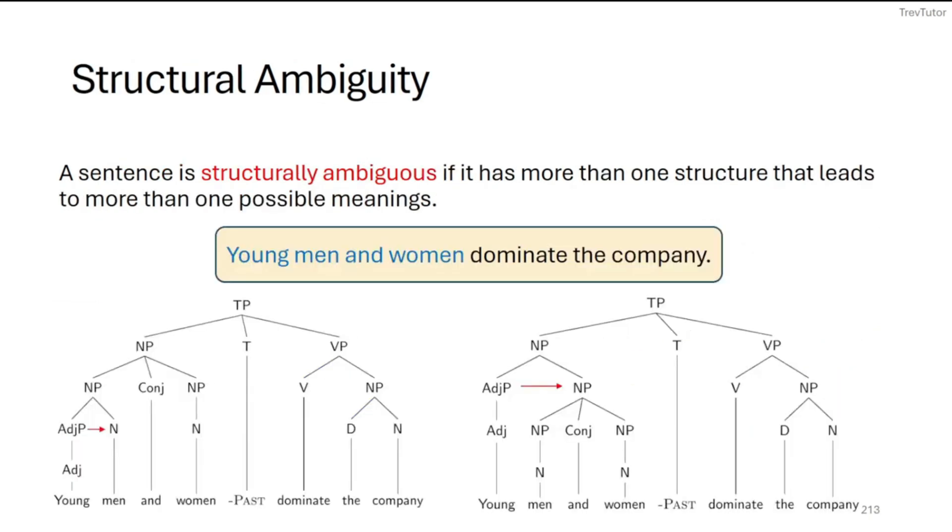Now, structural ambiguity, we saw a little bit with prepositional phrases, but this is when we have more than one possible structure for a sentence.